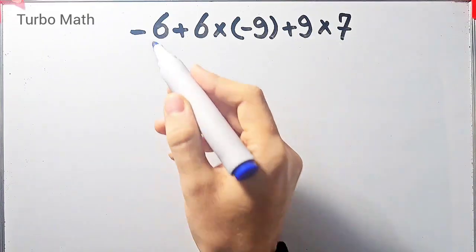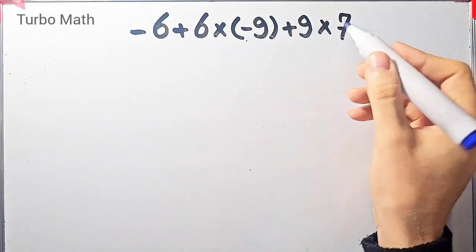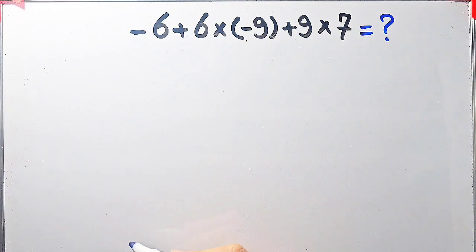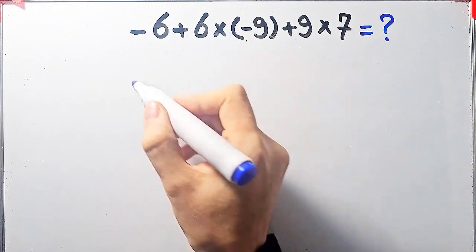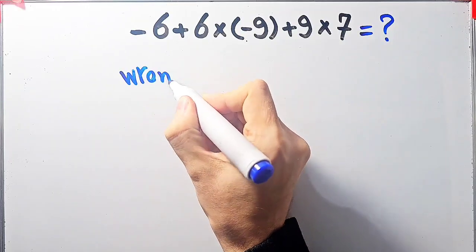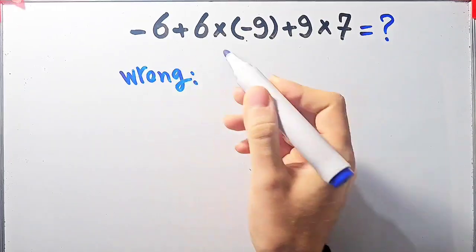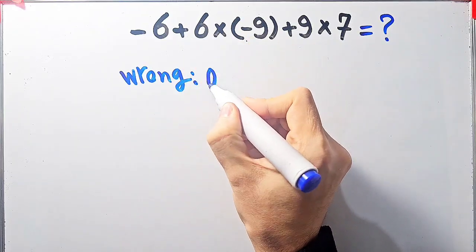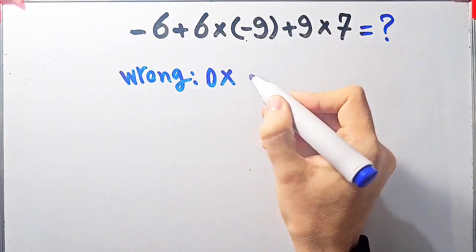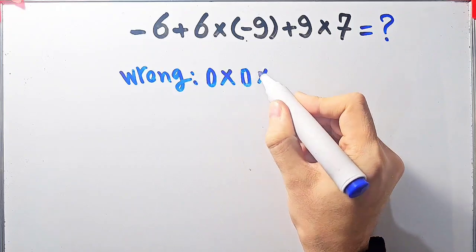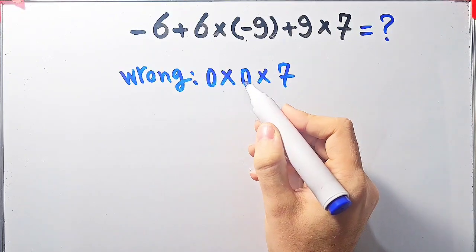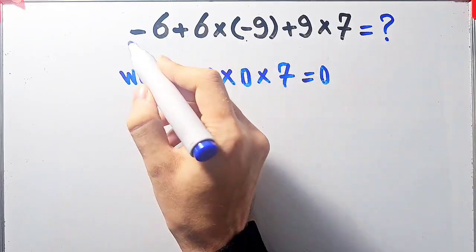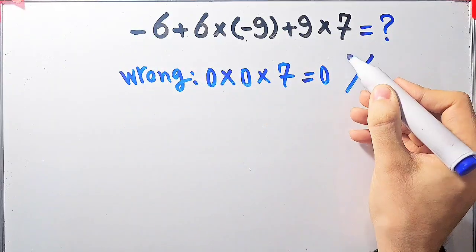In the first question we have negative 6 plus 6 times negative 9 plus 9, then times 7. What is the answer? Some people solve this starting from the left without paying attention to the priority of mathematical operations. They get: negative 6 plus 6 equals 0, then 0 times negative 9 plus 9 equals 0, then 0 times 7 equals 0. They say the answer is 0, but this is wrong.